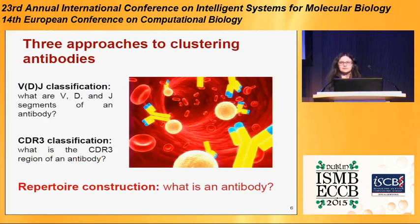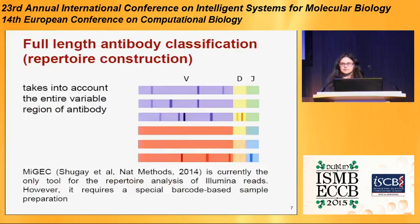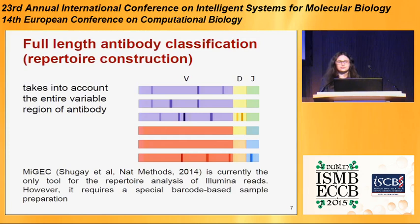There are three possible approaches to clustering antibody repertoires. The first is VDJ classification, where we try to assign to each antibody the closest V, D, and J gene segments from a database. The second is CDR3 classification, where we compute the CDR3 part of the antibody — the most important and diverse part. And the third is full-length antibody classification, which takes into account the entire variable region. When we wrote this paper, IgIC was the only tool for analysis of antibody repertoire using full-length classification, but it requires specific sample preparation where bioinformaticians assign to each B cell a unique barcode, thus avoiding the clustering problem.